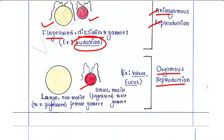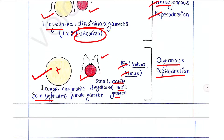The third type is oogamous reproduction. Here the female gamete is very large and non-motile — it has no flagella. The male gamete is very small and motile, having flagella. Fusion between these two types of gametes is called oogamous reproduction. Examples include Volvox and Fucus.